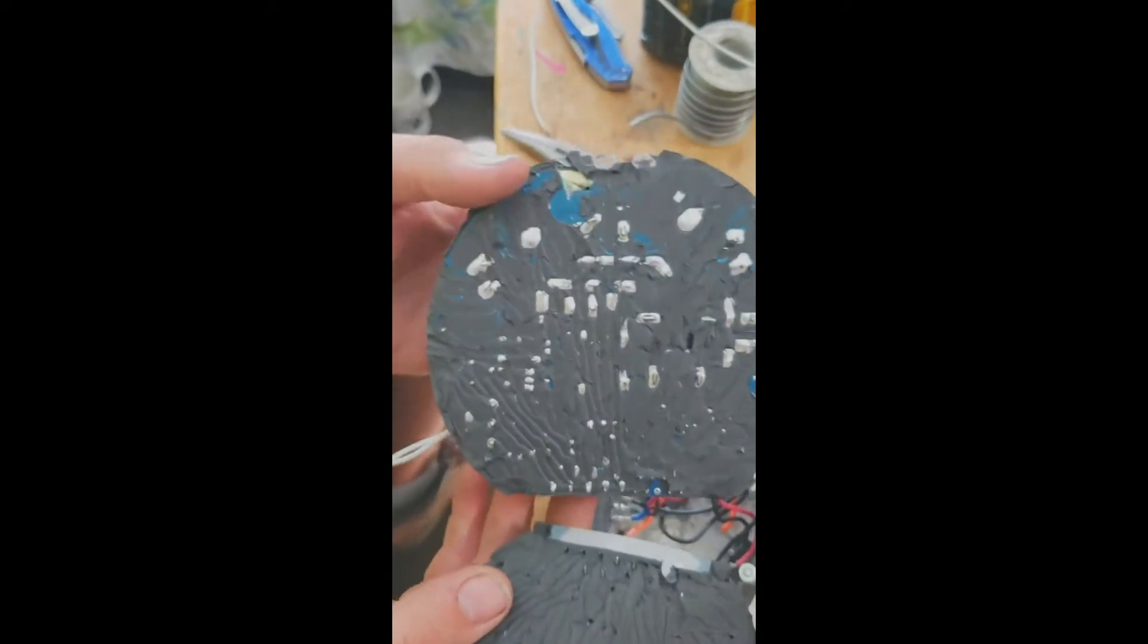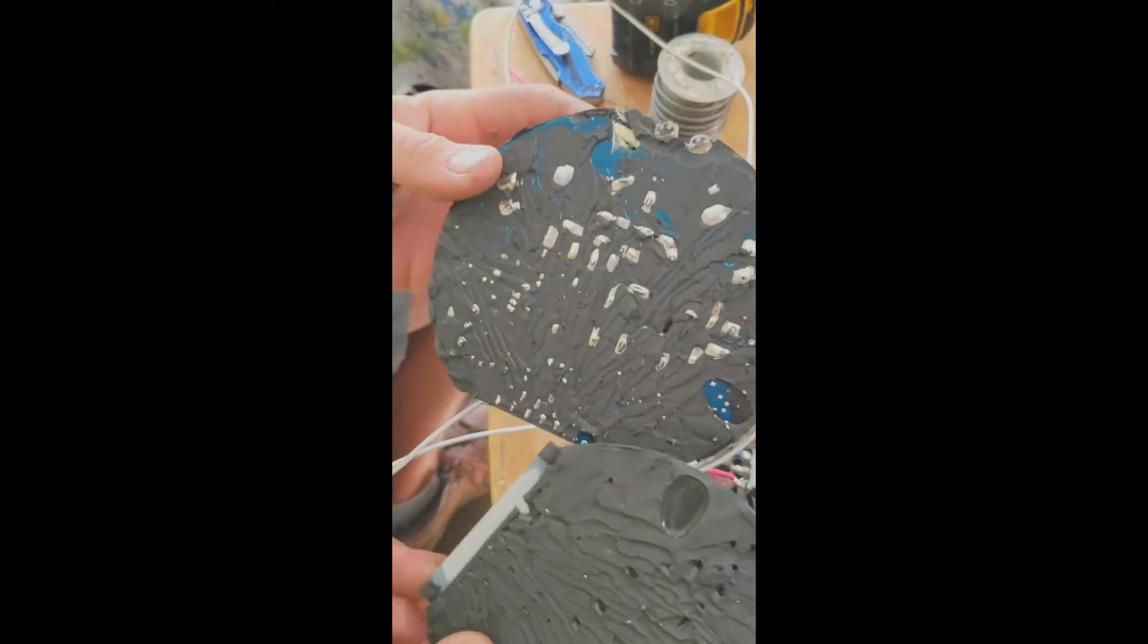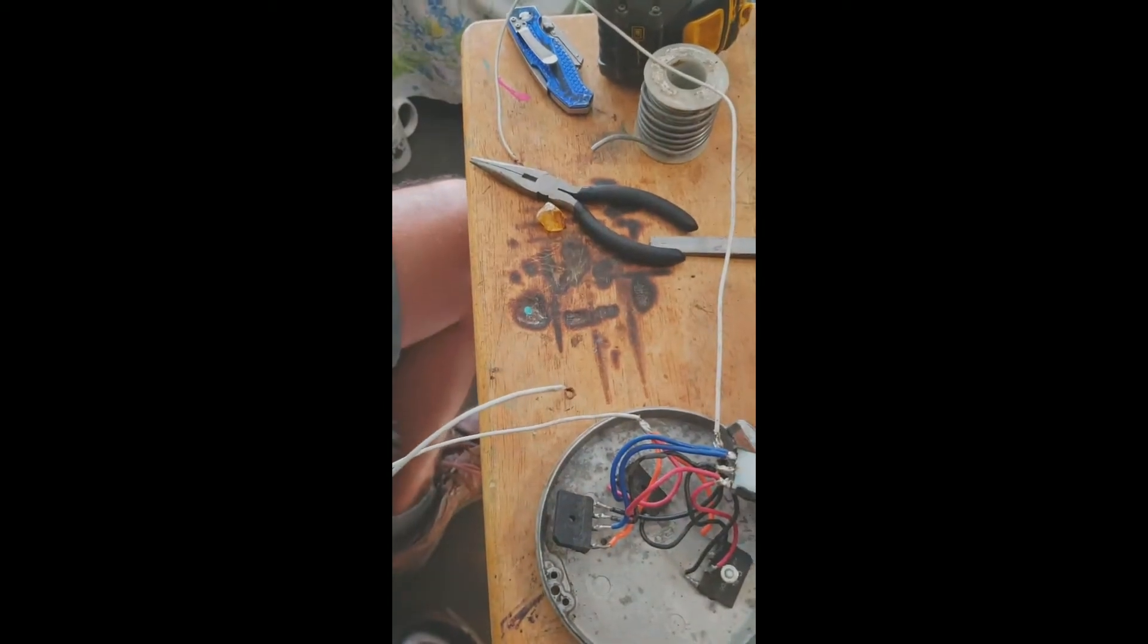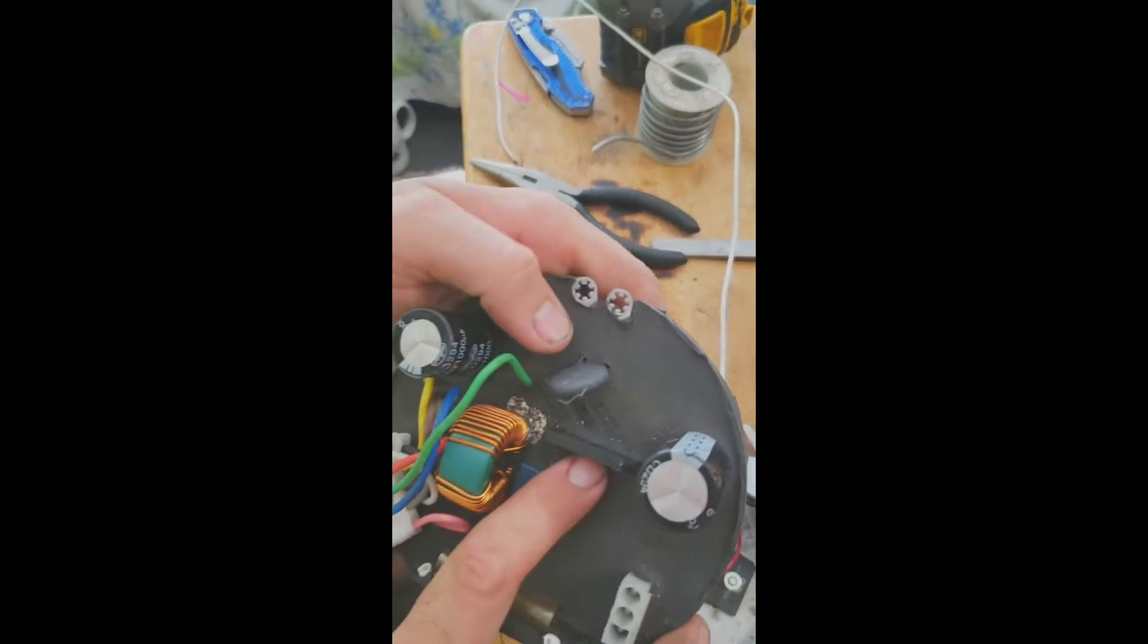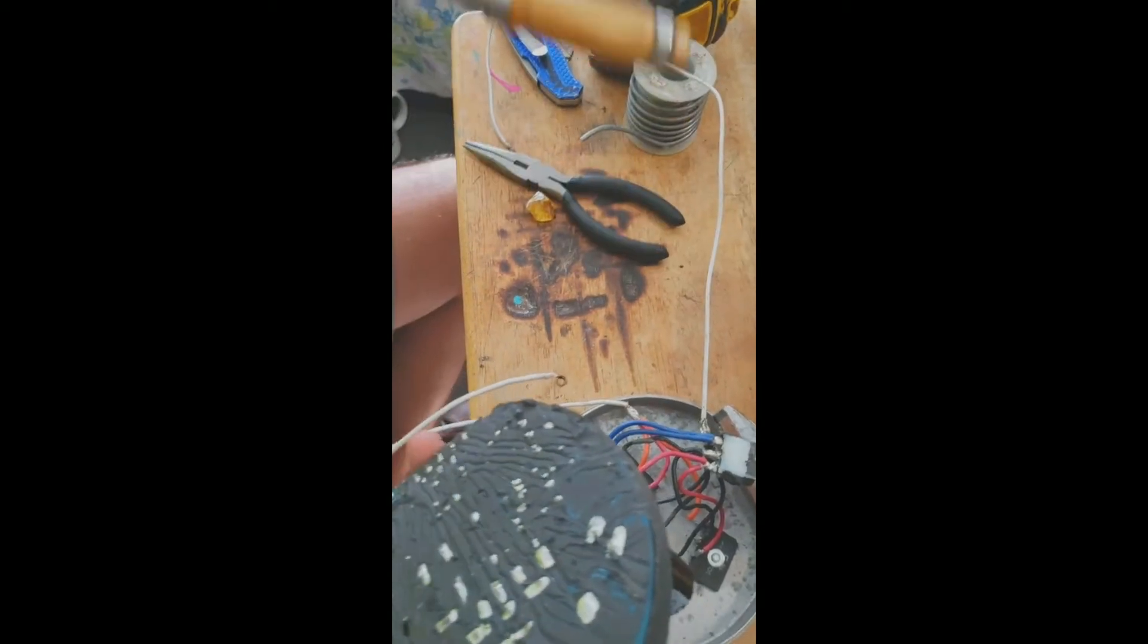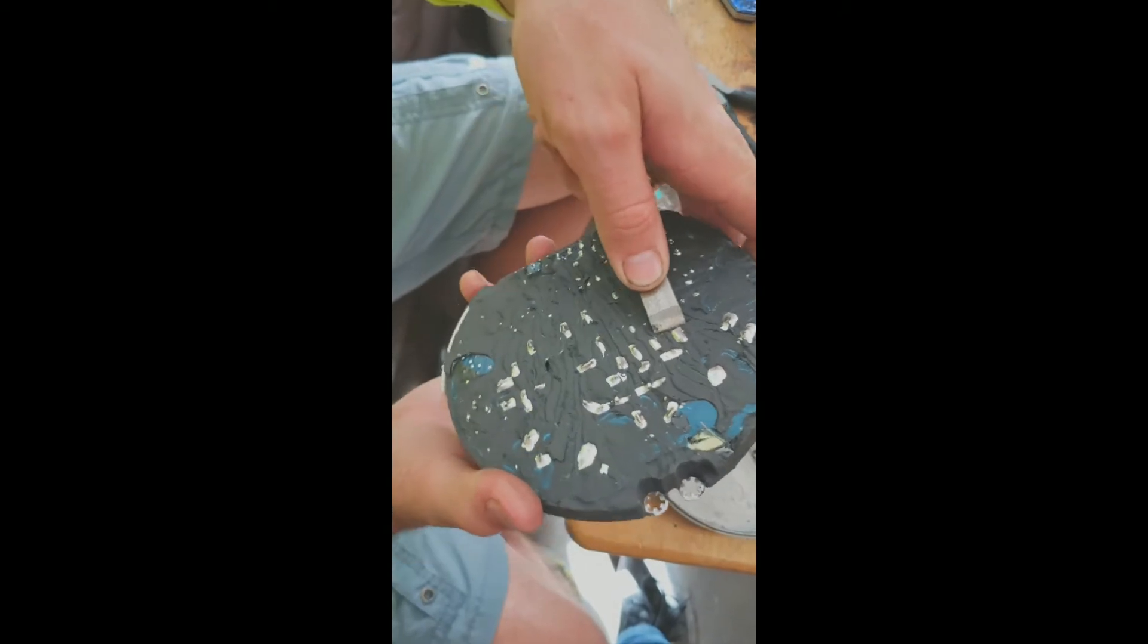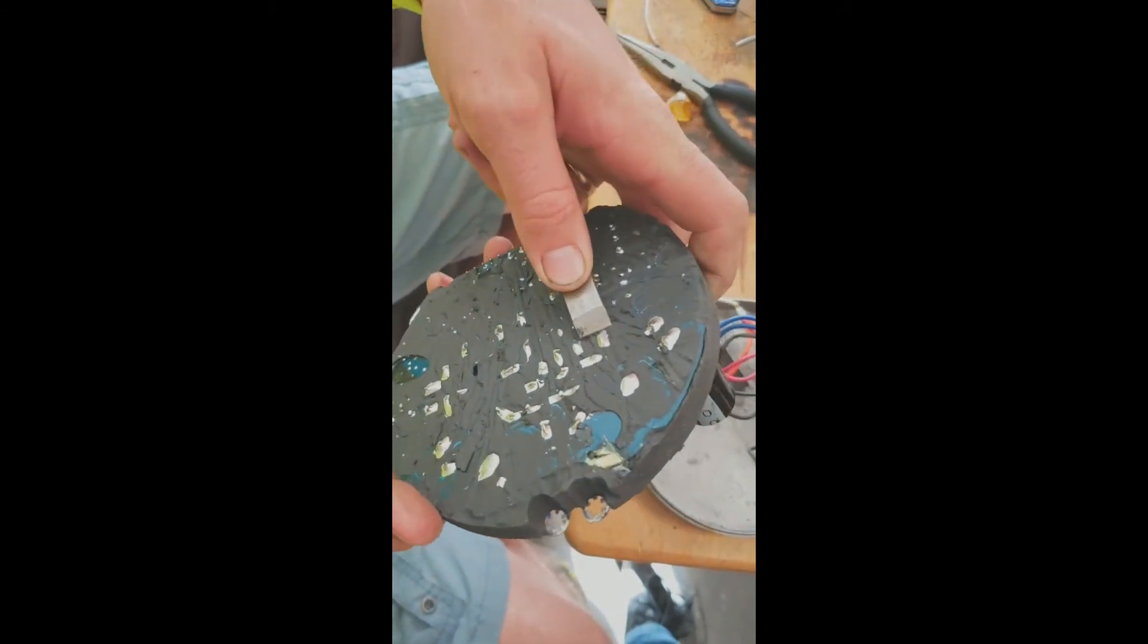This is the module after you strip the silicone from the back of the module. To extract the rectifying diodes here, first you flip it over and chisel off the copper and the solder material here.